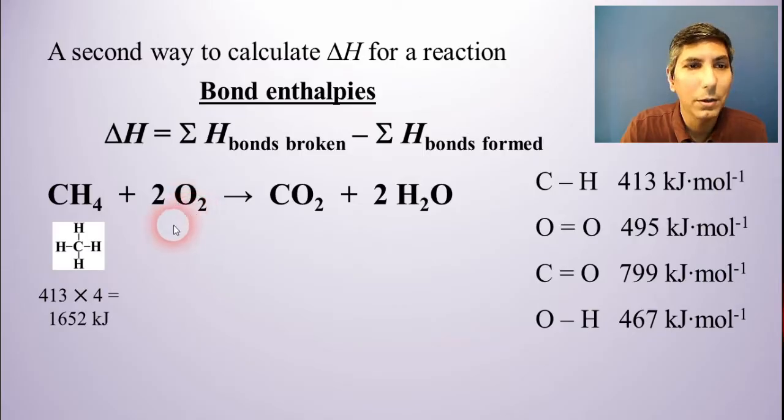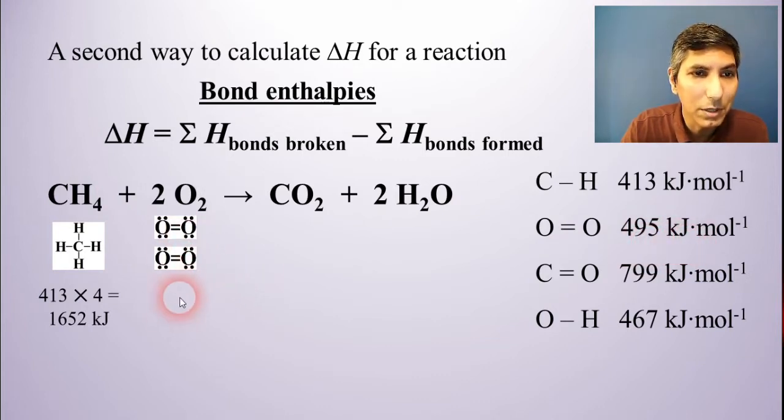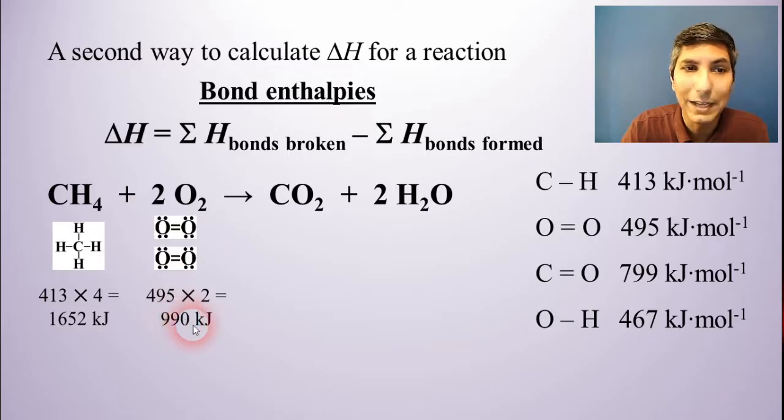Now how about the O2? Well, notice I have two of those, so I'm going to go ahead and just draw two of those. And we have oxygen-oxygen double bonds, and those have a bond enthalpy of 495 kilojoules per mole. So since we have two of those, I'm going to have to multiply that value by 2. And so I get 990 kilojoules for that part of the problem.